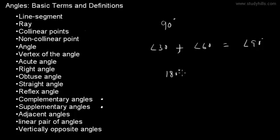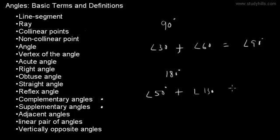They are called supplementary angles when the sum of two angles is 180 degrees. For example, a 50-degree angle plus a 130-degree angle equals 180 degrees, so they are called supplementary angles.